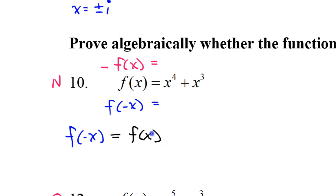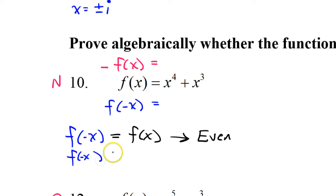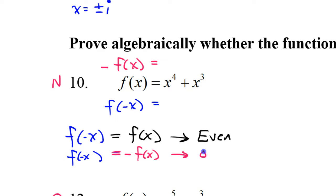The bottom line is this: if f of negative x turns out to equal the original function f of x, then that means it is even — we will have proven it. On the other hand, if f of negative x equals the opposite function — what you get if you put a negative in front of everything, which is negative f of x — then that proves that it is an odd function. If f of negative x doesn't equal either one of these, then that's when it's going to be neither.